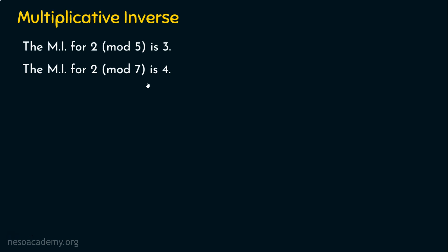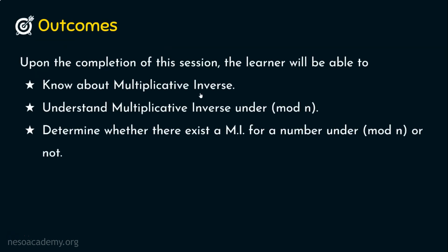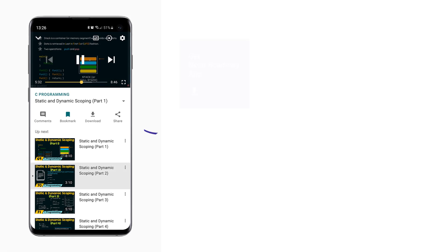But if the numbers are large — say the multiplicative inverse is 40,095 — manually trying every number is not feasible. We need an algorithm: the extended Euclidean algorithm. In coming lectures, I will solve problems using the extended Euclidean algorithm to find the multiplicative inverse. I hope you now understand multiplicative inverse, multiplicative inverse mod n, and how to determine whether a multiplicative inverse exists. Thank you for watching — see you next time!